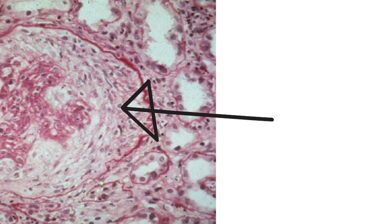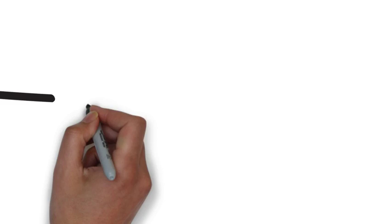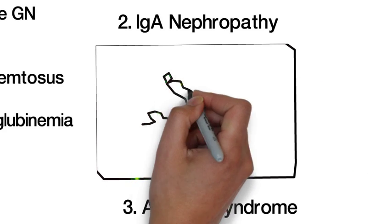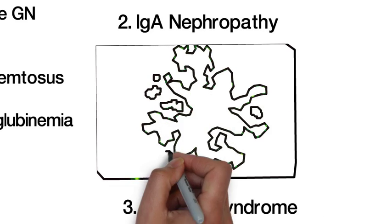And when that's seen, it represents a very aggressive form of glomerulonephritis. But it can be seen with other diseases, including lupus or diseases with anti-GBM antibodies, which we'll talk about in a minute.